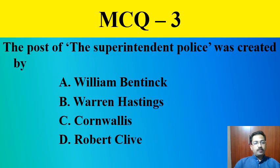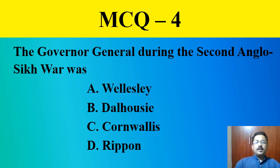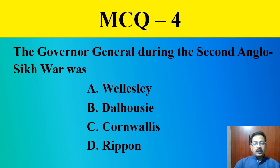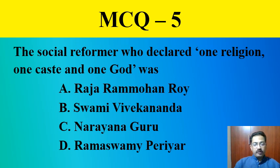MCQ question number three: The post of Superintendent of Police was created by — William Bentinck, Warren Hastings, Cornwallis, or Robert Clive. The correct answer is Cornwallis. MCQ question number four: The Governor General during the Second Anglo-Sikh War was — Wellesley, Dalhousie, Cornwallis, or Ripon. The correct answer is Dalhousie.